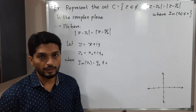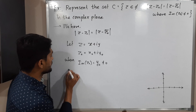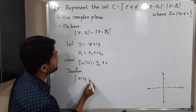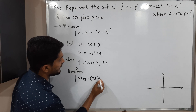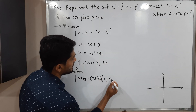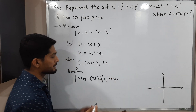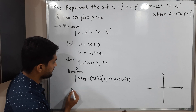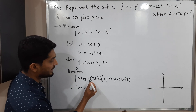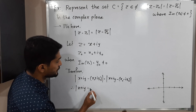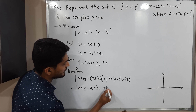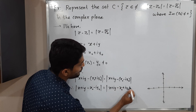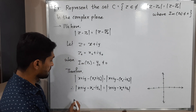The given condition is that the imaginary part of Z₀, which is y₀, is nonzero. Substituting, the left side becomes |（x + iy) - (x₀ + iy₀)|, and the right side becomes |(x + iy) - (x₀ - iy₀)|, since Z₀̄ = x₀ - iy₀. Expanding the brackets, the left side gives |(x - x₀) + i(y - y₀)| and the right side gives |(x - x₀) + i(y + y₀)|.